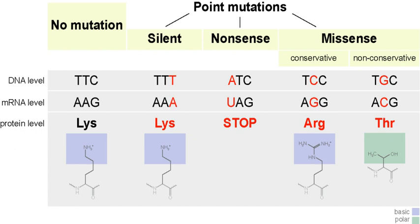Point mutations that occur in non-coding sequences are most often without consequences, although there are exceptions. If the mutated base pair is in the promoter sequence of a gene, then the expression of the gene may change. Also, if the mutation occurs in the splicing site of an intron, then this may interfere with correct splicing of the transcribed pre-mRNA.